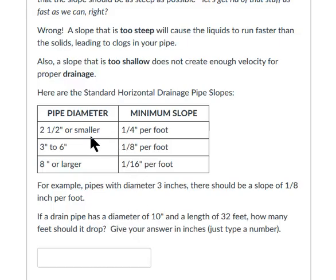The first thing we need to figure out is what slope we need given our pipe diameter. There are different slopes recommended for different pipe diameters. Our pipe has a diameter of 10 inches, so that's 8 inches or larger. They recommend that our slope should be 1/16th of an inch per foot.